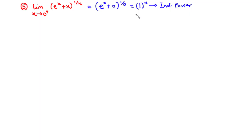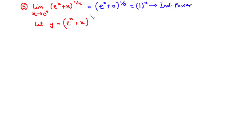Because we don't have an indeterminate quotient, we need to manipulate this function so that we have a fraction. First, we represent this function with another variable: let y be equal to e to the power x plus x, all exponent 1 over x.